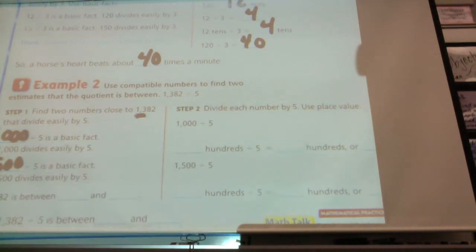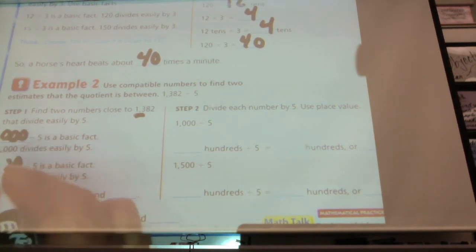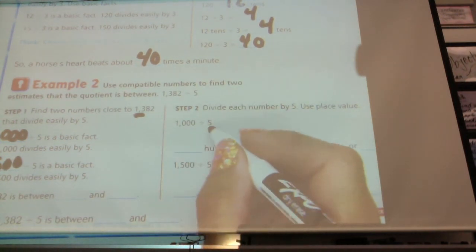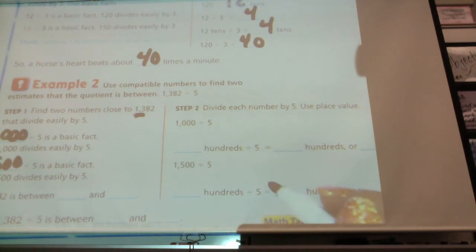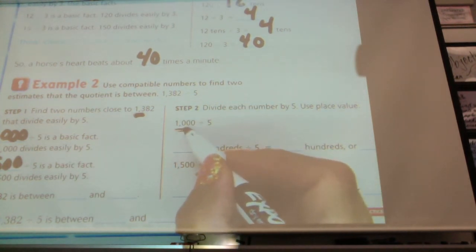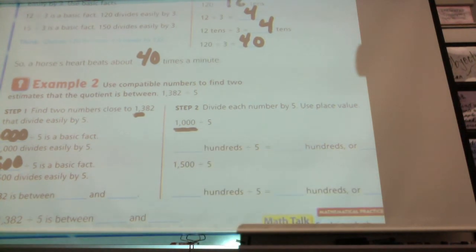So 1,500 divided by 5 is a basic fact that is going to work for us. Okay. So if we do 1,000 divided by 5, how many hundreds is that? Think first before you start saying it out loud. How many hundreds are right here? Raise your hand when you know. We did this yesterday, so I shouldn't see the blank faces. How many hundreds are there?